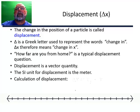And here's a formula. It's our first formula. Yay! The formula says the change in position or the displacement is equal to the final position minus the initial position. Now let's do a quick example of that.